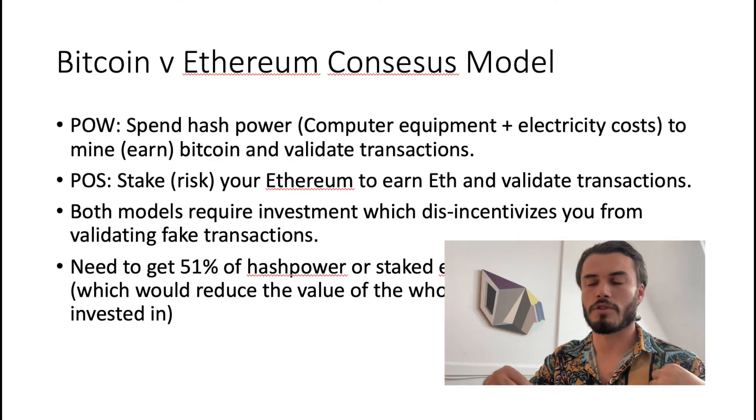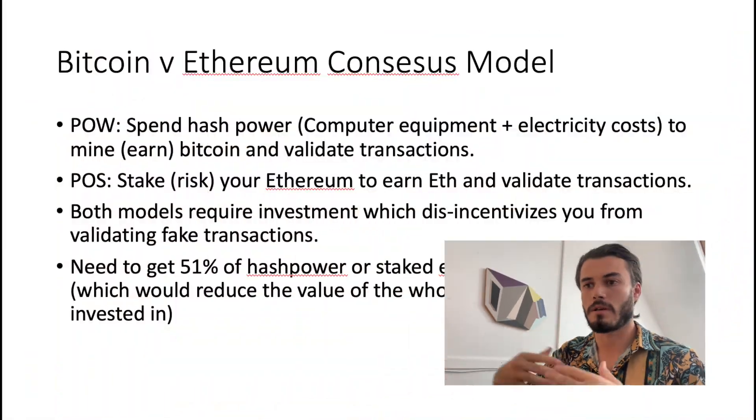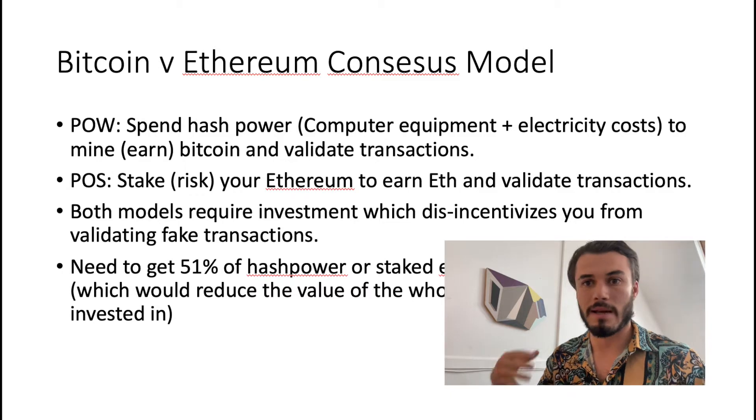If there was no investment required, there'd be no disincentive to submit fake transactions. But if everyone has put in money and your fake transactions aren't going through, you've lost that money. That's why investment is required in both models to achieve decentralized consensus. With Bitcoin's proof of work model, the investment is computing power — you buy powerful supercomputers which mine for Bitcoin by solving complex mathematical equations, basically just to prove you've put in investment. Whoever puts in the most hash power and electricity is most likely to earn the Bitcoin reward.